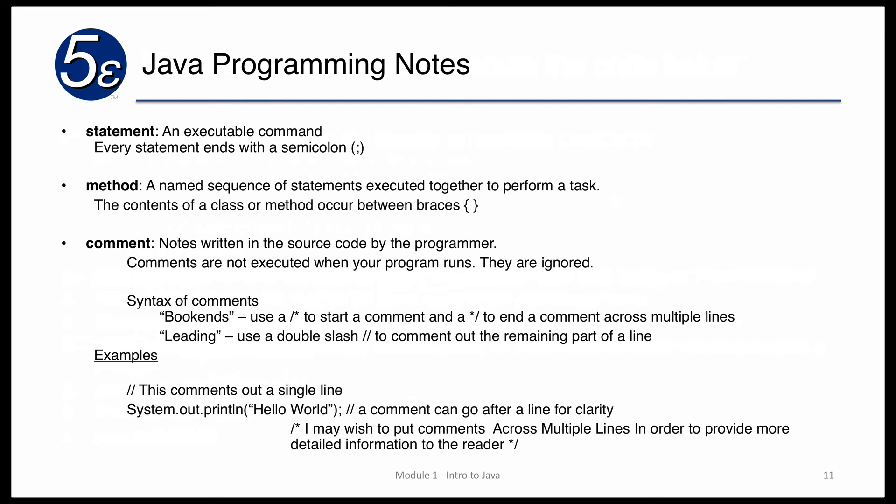A few programming notes: a statement is an executable command, and every statement ends with a semicolon. Methods are named sequences of statements executed together to perform a task — there may be five, six, seven or more statements grouped together, denoted by an open brace and a close brace. You'll be using open and close braces, brackets, and parentheses, so it's important to know the difference between them. The squiggly brace is what we classify as the brace.